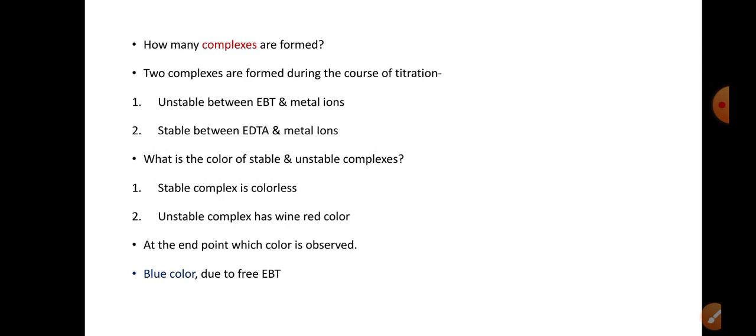As we know that EBT and metal ion complex is unstable. So when EDTA is added to the water, it breaks the unstable complex and forms complexes with all the cations available to it. As a result of which EBT is set free. And when it is set free, the color change is observed from wine red to blue.